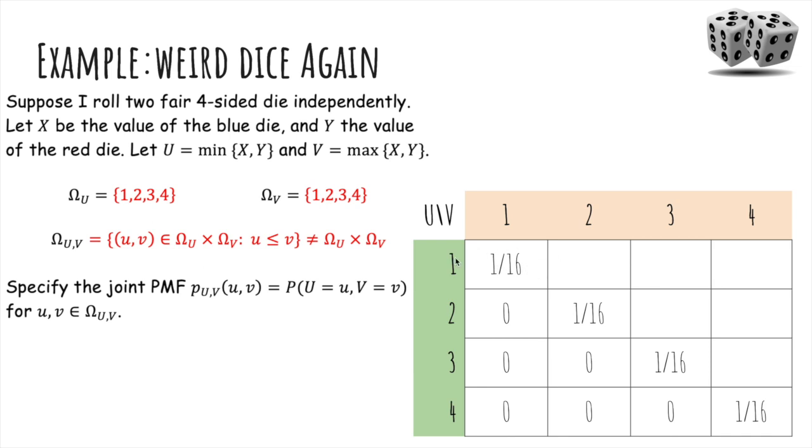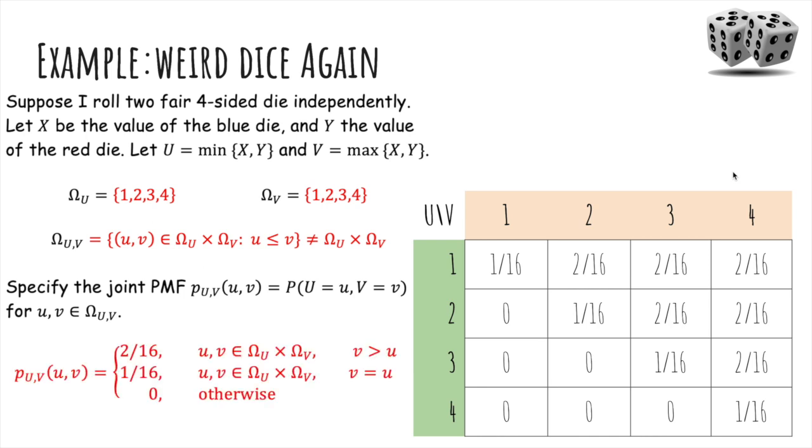And then finally, if we want, for example, U to be 1 and V equals 2, so the min is 1, the max is 2, well, there's two ways that can happen. Either we got (1,2) or (2,1). So there's two ways out of 16 to get all of the other values here. And these do sum to one. And we can write it like this as well in a messier way.